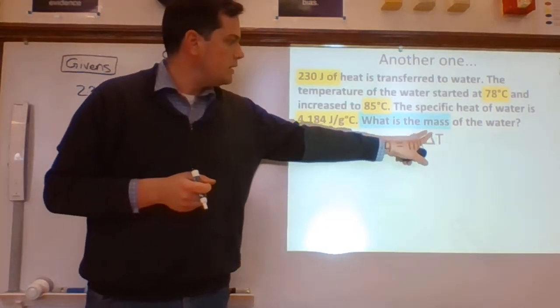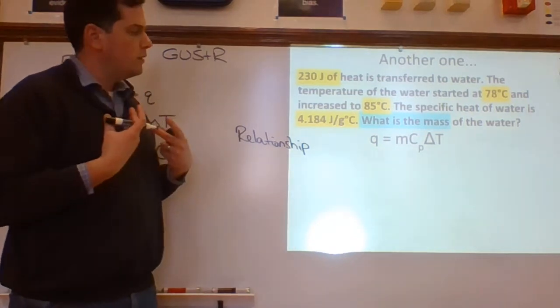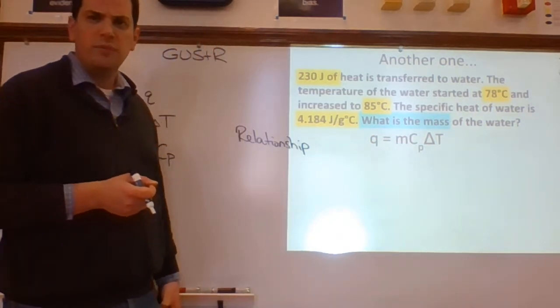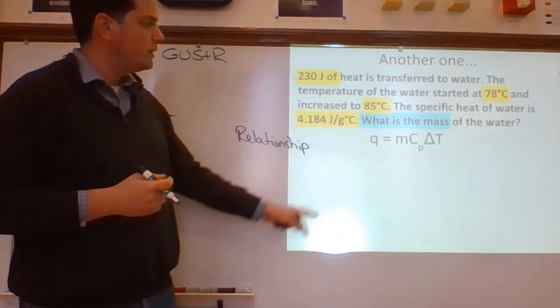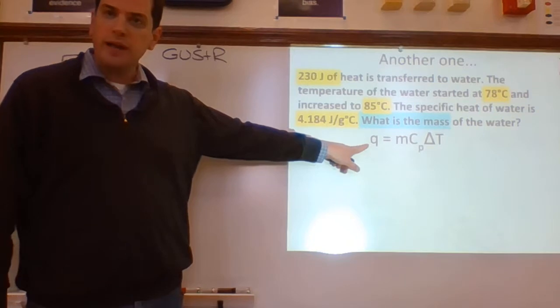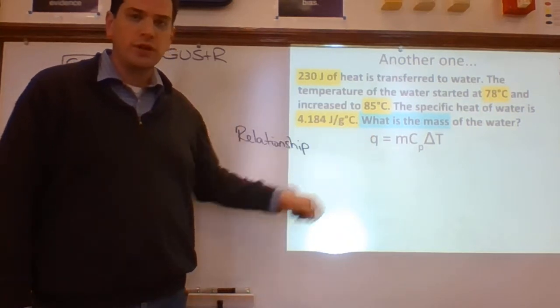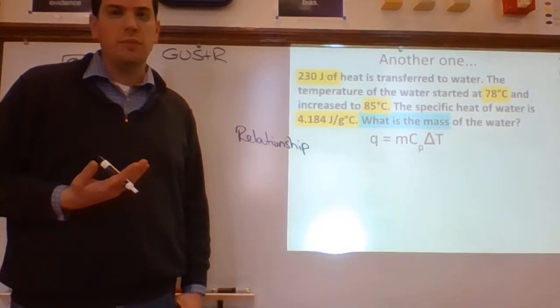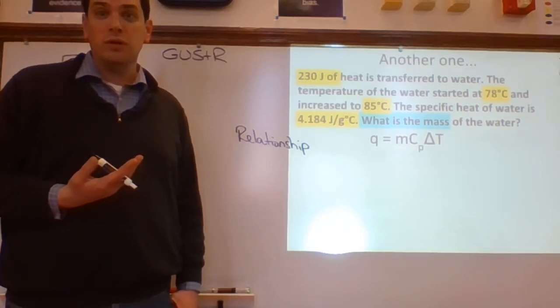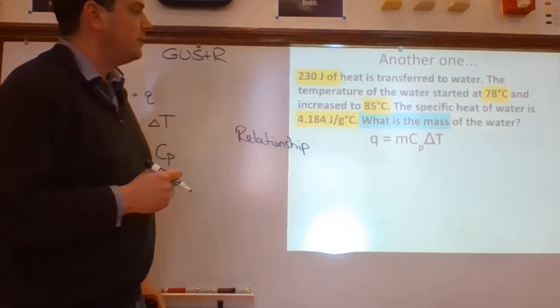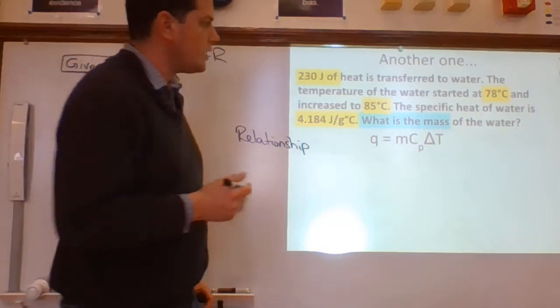Q equals M times Cp times delta T. I call it the Q equals MCAT equation because the delta kind of looks like an A. It's not really an A. It's a delta. It means change. It means a change in temperature. But there's our equation. Here's the problem, though. Our unknown is not Q. Our unknown is M. Do you see how our equation has Q all by itself over here? The equation is solved for Q? We have to change that. We have to do some algebra. Please don't try to just plug numbers in. Some people get it right, but a lot of people don't. Trust me on this one. I've been doing this for a while. Let's massage this equation. Let's finesse it before we try to plug numbers in. I'm going to do that over here.